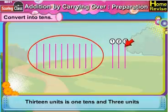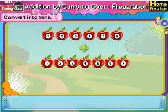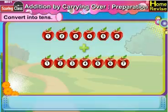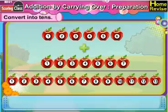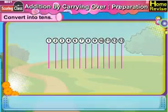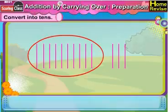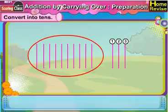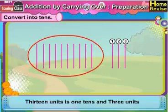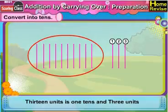Next, 6 units plus 7 units is equal to 13 units. Let us draw 13 straight lines, make a group of 10 lines — three lines remain. So 13 units is the same as 1 ten, 3 units.